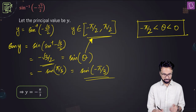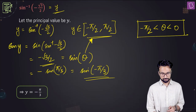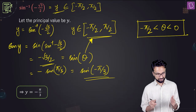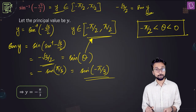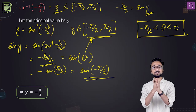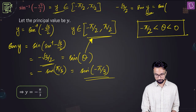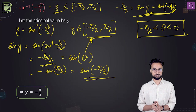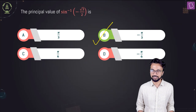To summarize: we have sine inverse of minus root 3 by 2. We took that as some value y, which must be between minus pi by 2 and plus pi by 2. Writing minus root 3 by 2 as sine of minus pi by 3, the corresponding angle is minus pi by 3. The correct answer is option B.